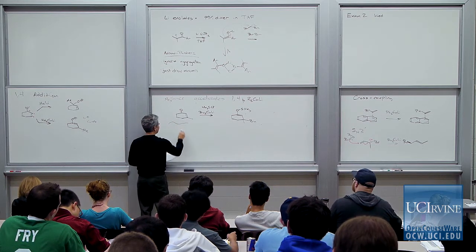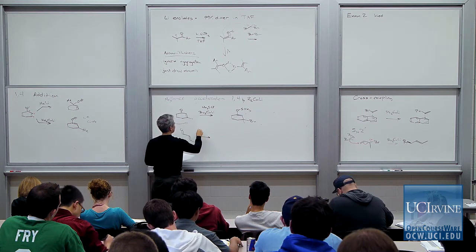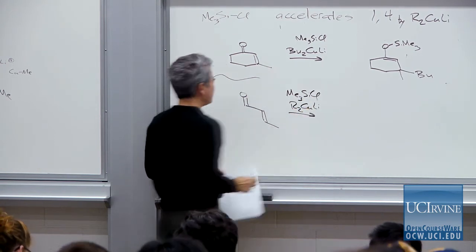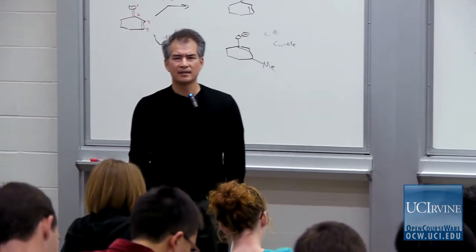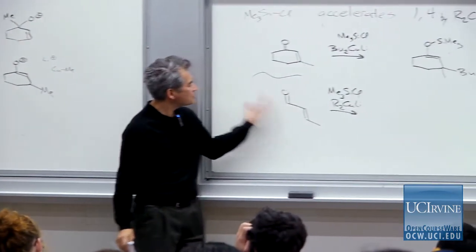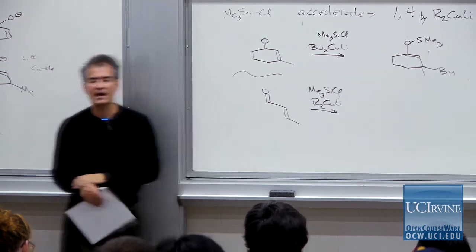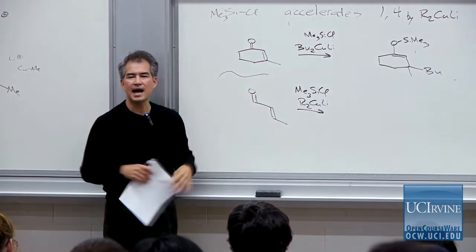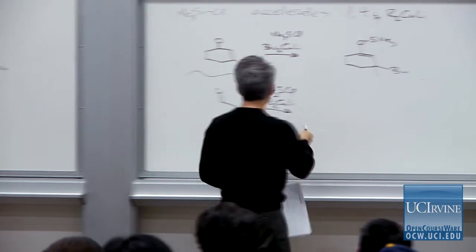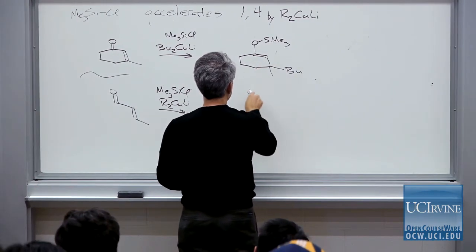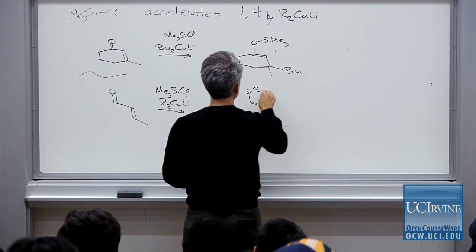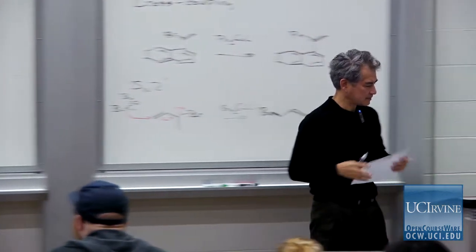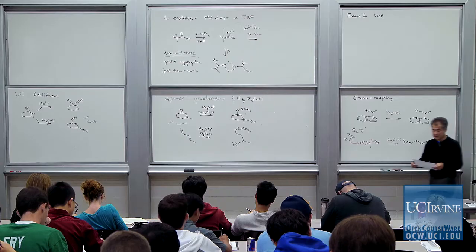The last dramatic example of the effect of TMS chloride with cuprates: aldehydes are so reactive that it's very hard to keep nucleophiles from attacking them and get them to attack at the beta position on an enone. But if you use this combination of TMS chloride and cuprate, you still favor addition to the beta carbon over addition to the aldehyde carbon. It's phenomenal that you can get that kind of selectivity and not attack the aldehyde.